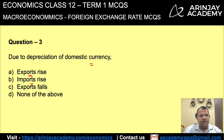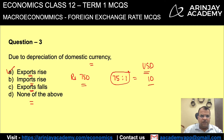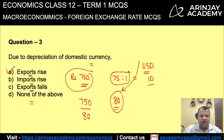Due to depreciation of the domestic currency: export rises, import rises, export falls, or none of the above? The correct answer is export rises. Suppose a commodity was available for 750 rupees and the conversion rate was 75 rupees to 1 dollar, meaning a US buyer needed 10 dollars. If the rate changes to 80 rupees per dollar, the buyer now needs only 750/80 ≈ 9.4 dollars — the price has fallen for the US buyer, so he buys more, and exports rise.